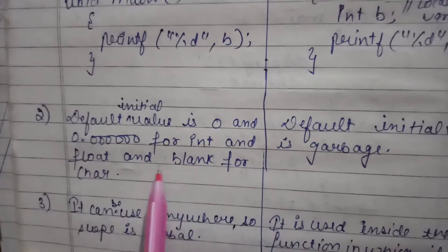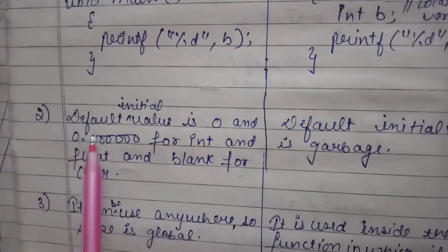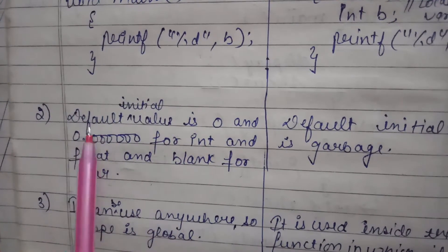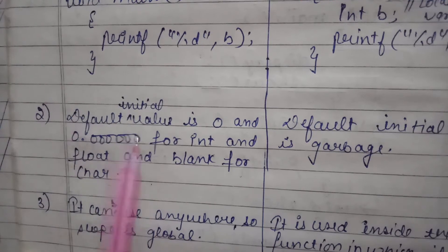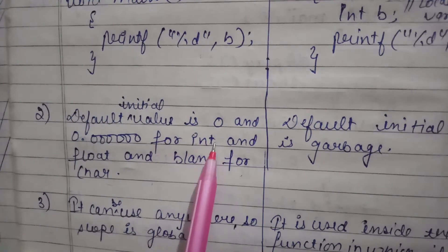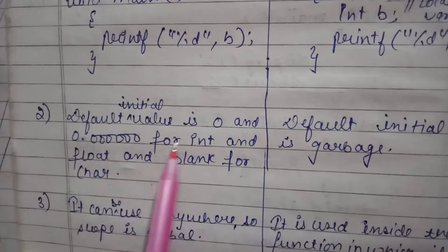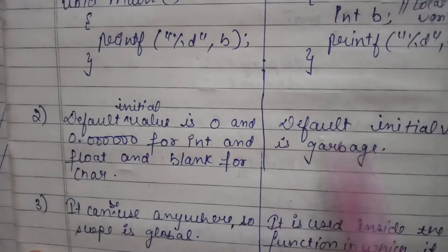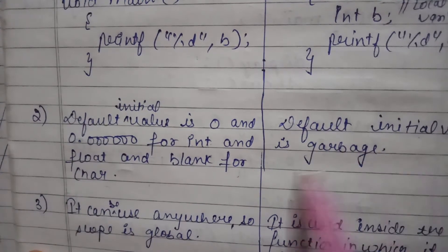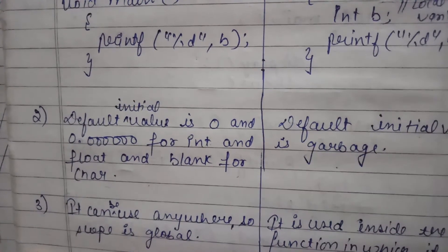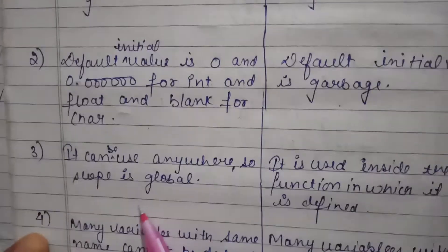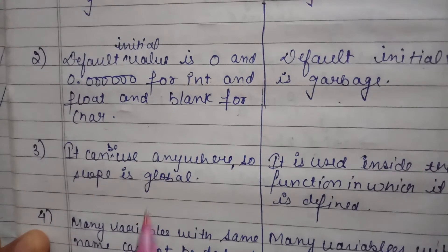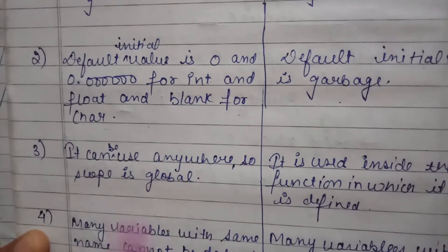The default initial value of global variables is 0 or 0.00. But the default initial value of local variables is a garbage value. That is the third difference.